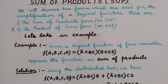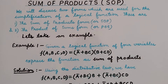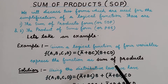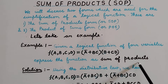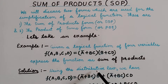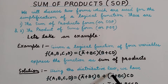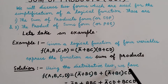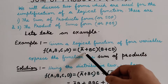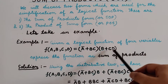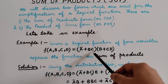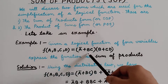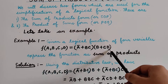To express the function F(A, B, C, D) as Sum of Products, we will first make use of the distributive law. Using the distributive law, we can write this expression as (A complement + BC) multiplied with B, plus (A complement + BC) multiplied with CD.